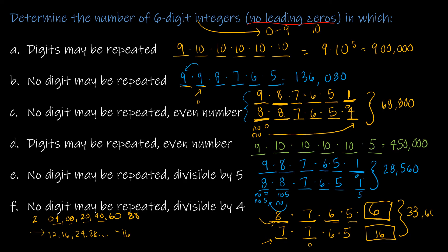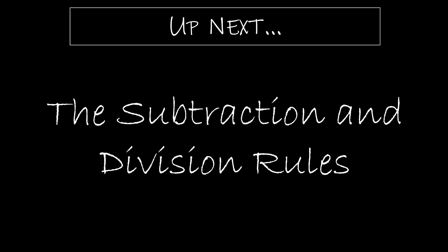Some of these were tougher than others, but that's the point — these seem like simple concepts but putting them all together can be more complicated. Coming up next, we're going to look at the subtraction rule and the division rule. The subtraction rule is really just the principle of inclusion-exclusion for two sets, and we'll study that principle in much more detail.